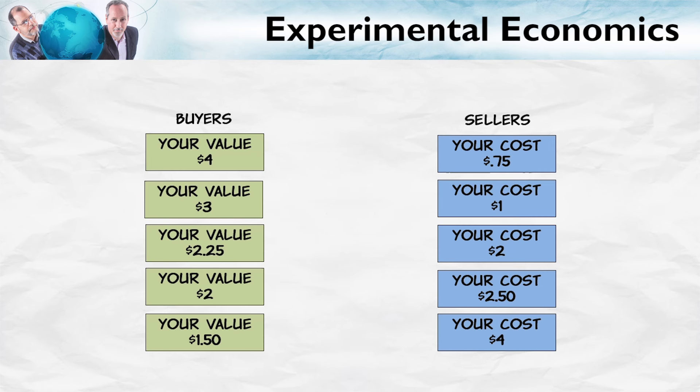Smith let the students make trades in a double oral auction. Traders would call out, 'I'll sell for $2,' 'I'll buy for $1,' and so forth. Any time two traders agreed to a deal, the price would be called out — 'Sale at a price of $1.50.' If a buyer and a seller agreed to make a trade at, let's say, a price of $1, then the seller would earn the price minus their cost — in this case, the seller would earn a profit of $0.25.